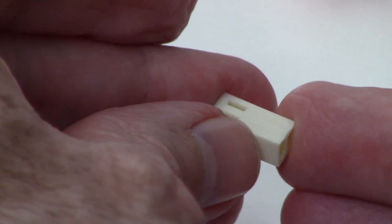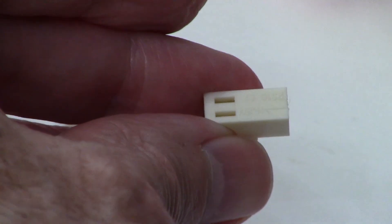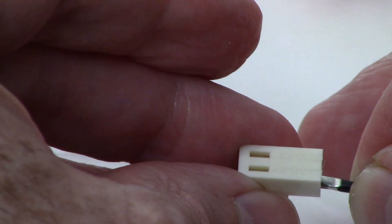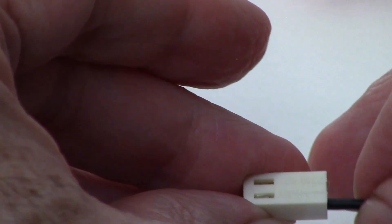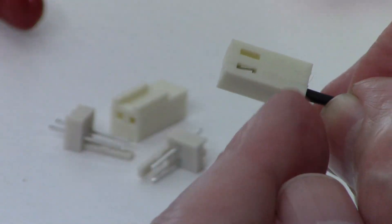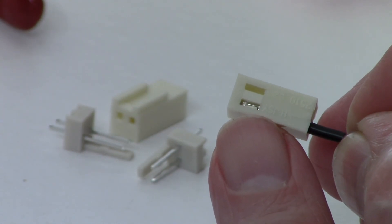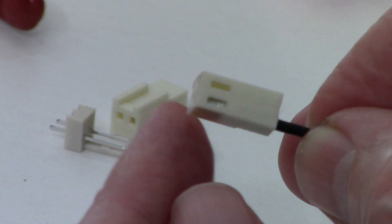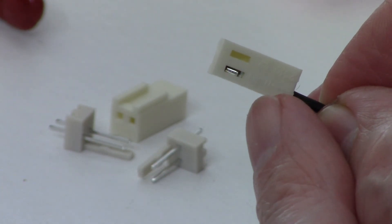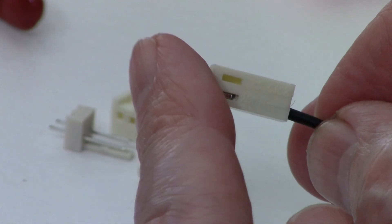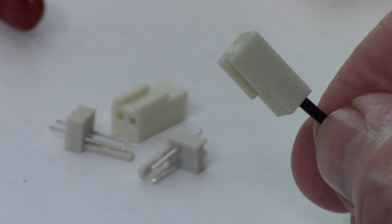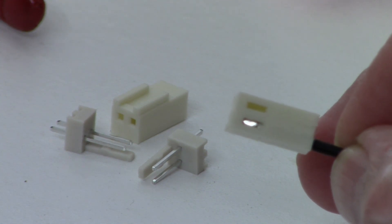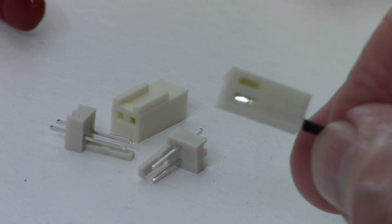And these notches here, you're going to flip this crimp over and insert it like this, okay? So the little pin engages that slot. This is a two position crimp. I'm actually, for my purpose, I'm only going to use one of these. So that's how you do it. Hopefully that's helpful. If you have any questions, just leave me a comment. Thanks.